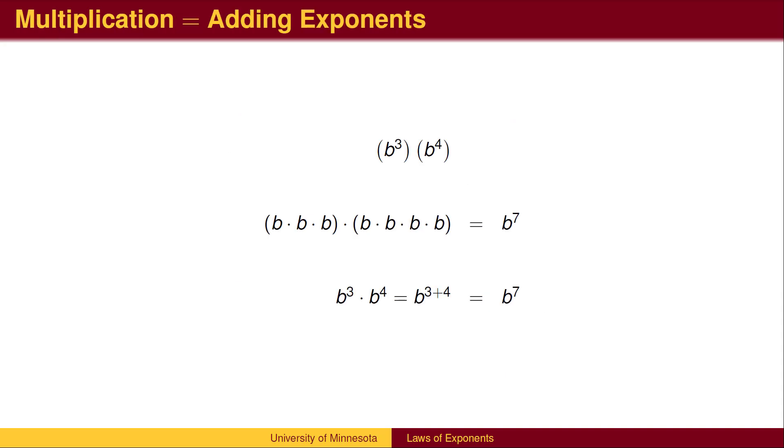b cubed times b to the 4th is the multiplication of 3 b's by 4 b's, which gives us a total of 7 b's. When we multiply two terms with exponents, we add powers.